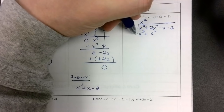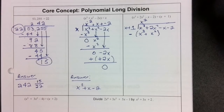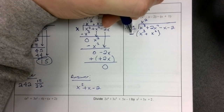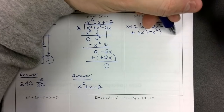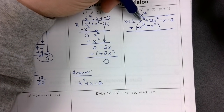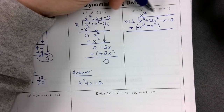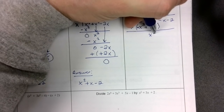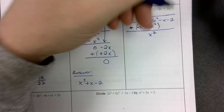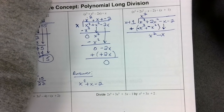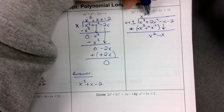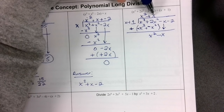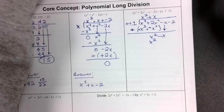Both of those become negative when we distribute the subtraction sign. x to the third and negative x to the third cancel each other out — those first terms should always cancel. 2x squared plus negative x squared is x squared. Bring down the next term, minus x. Repeat the process: what do I have to multiply x by to get x squared? The answer is x. Then x times x is x squared, and x times 1 is x.